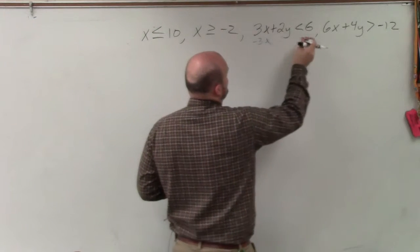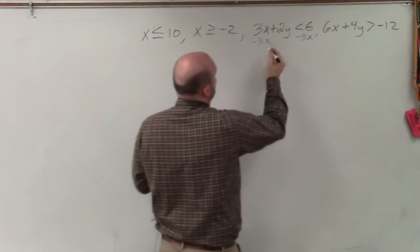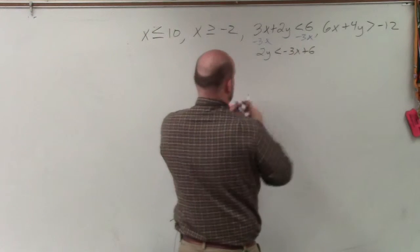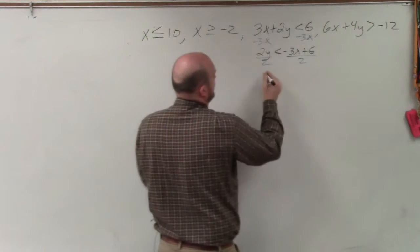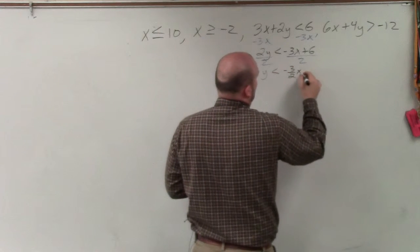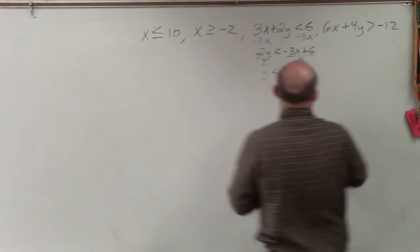So I'll subtract the 3x. Therefore, I have 2y is less than negative 3x plus 6. Then I'll divide by 2, and I get y is less than negative 3 halves x plus 3.